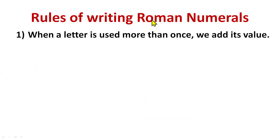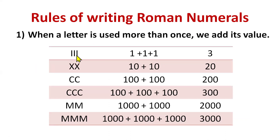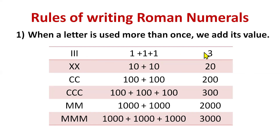Now, rules of writing Roman numerals. The first rule: when a letter is used more than once, we add its value. For example, III means 1+1+1 = 3. XX means 10+10 = 20. CC means 100+100 = 200, and CCC means 300. MM means 2000, and MMM means 3000. So if any letter is used more than once, we add its value to get the number.